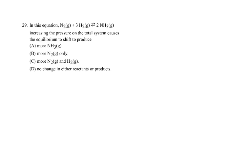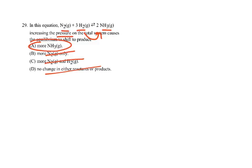Question 29: the last one. Increasing the pressure on the total gaseous system shifts equilibrium to the side with fewer moles of gas. On the left there are four moles of gas; on the right there are two moles. So the reaction shifts right, producing more NH₃ gas. Answer A. That is the first section of this practice final.